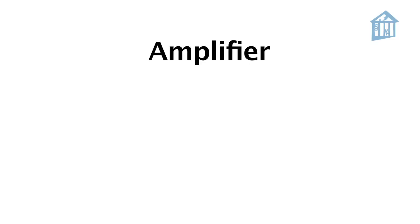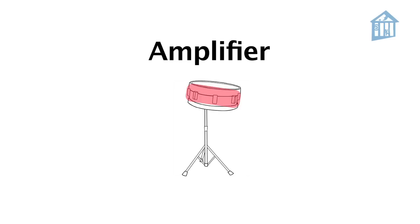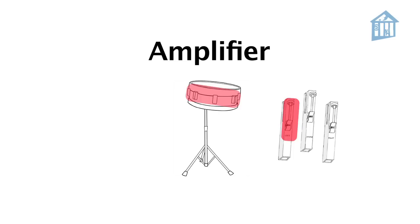The amplifier is the part of the instrument that increases the level or volume of the sound being produced. For example, the body of our drum, the shaft of our chime, or in some cases an electronic device, like our electric amplifier for our bass.